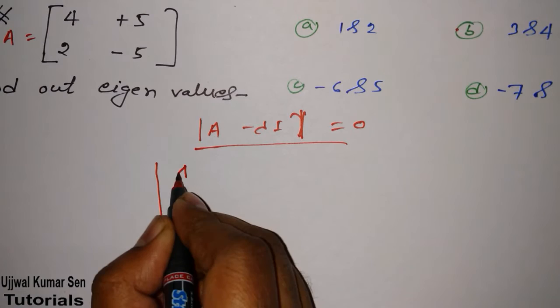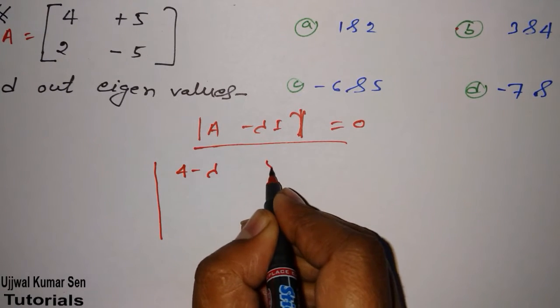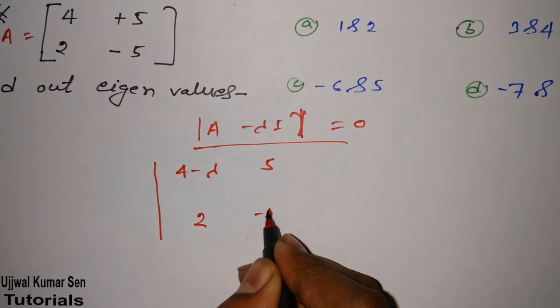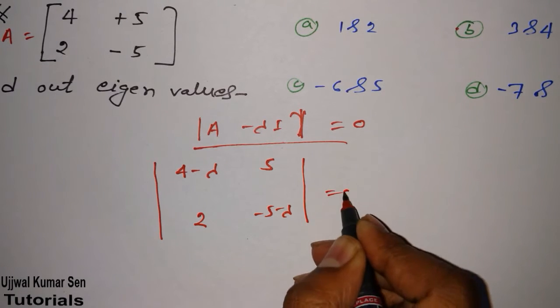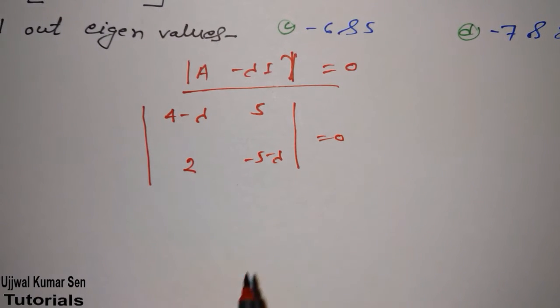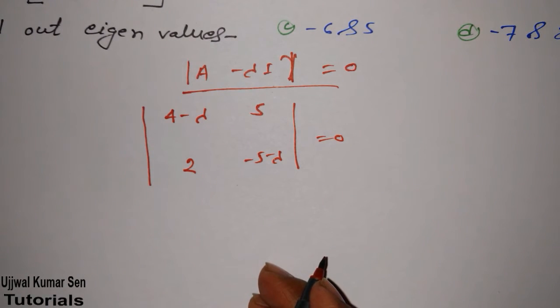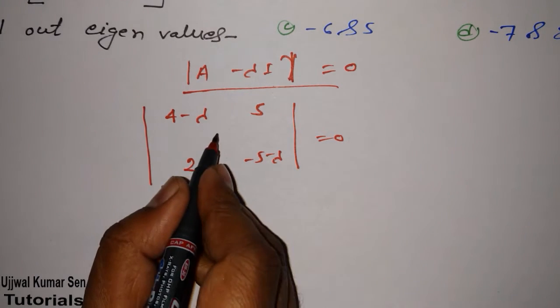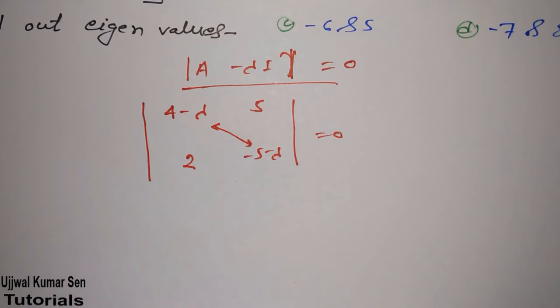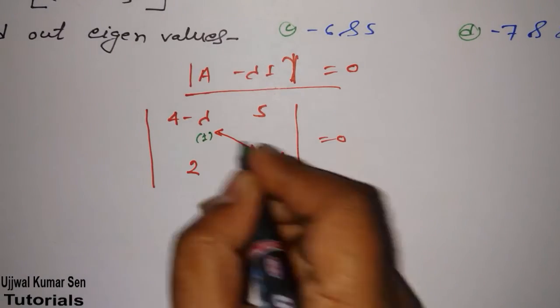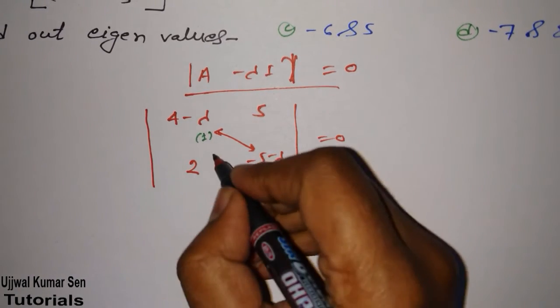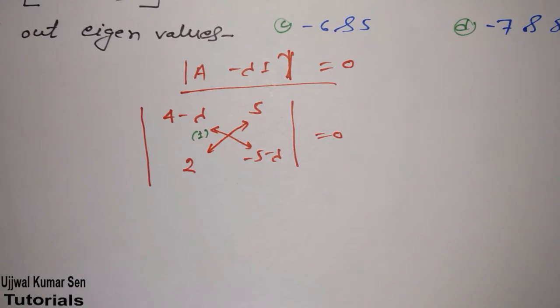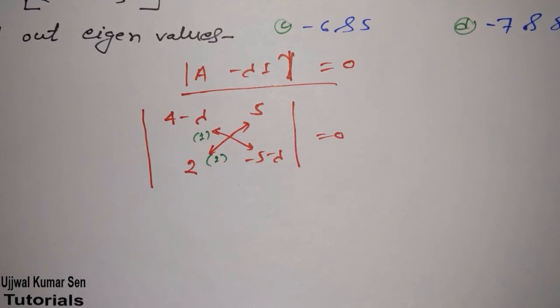After writing, we got 4 minus lambda, 5, 2, minus 5 minus lambda equal to zero. If you don't know how to find the determinant of a 2 by 2 matrix, just do like this: first do multiplication of this and then subtract that multiplication with this second multiplication. Simple, right?